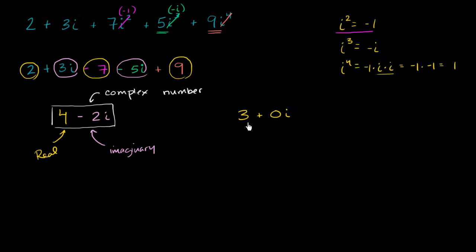Likewise, imaginary numbers are a subset of the complex numbers. For example, you could rewrite i as a real part, 0 is a real number, 0 plus i. So the imaginaries are a subset of complex numbers. Real numbers are a subset of complex numbers. And then complex numbers also have all of the sums and differences, or all of the numbers that have both real and imaginary parts.